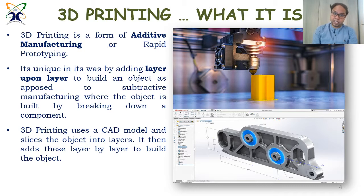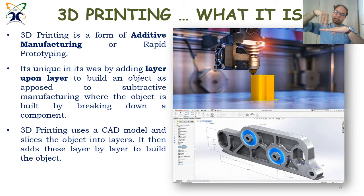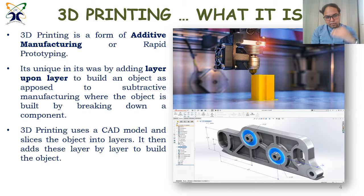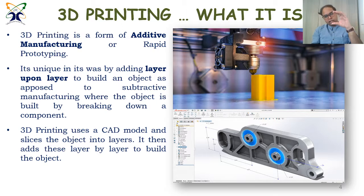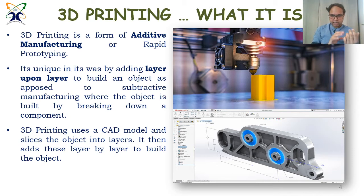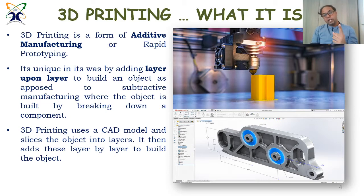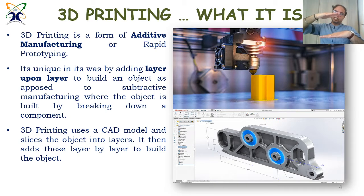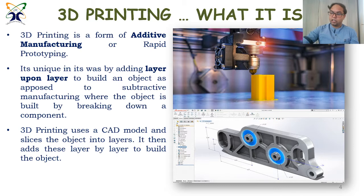We now know what 3D printing is. It is basically a form of additive manufacturing — you add one layer, then two, then three, and that's how you get a 3D image. This is done by first designing the object in 3D software, designing all aspects in 3D modeling, then slicing it into layers like alpha, beta, and so on. Then you command your printer to print each 2D layer one above the other, and that's how you get the 3D object.